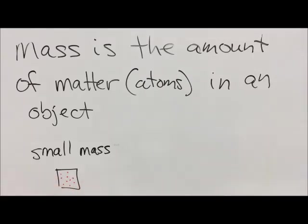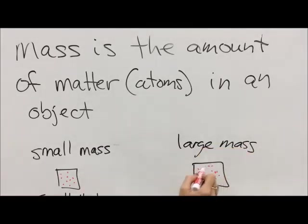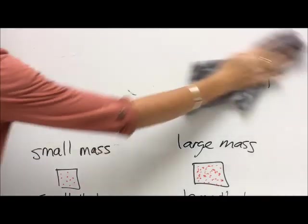And those atoms are what give the object mass. A small mass has a small number of atoms. A large mass has a large number of atoms. It doesn't necessarily have anything to do with the volume, the size, how much space something takes up. It's how many atoms are packed into whatever the space is that gives us mass.